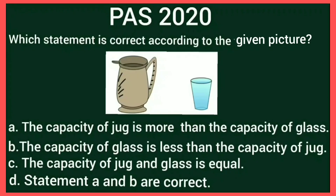Option A: The capacity of the jug is more than the capacity of the glass. Option B: The capacity of the glass is less than the capacity of the jug. Option C: The capacity of the jug and glass is equal. Option D: Statements A and B are correct.